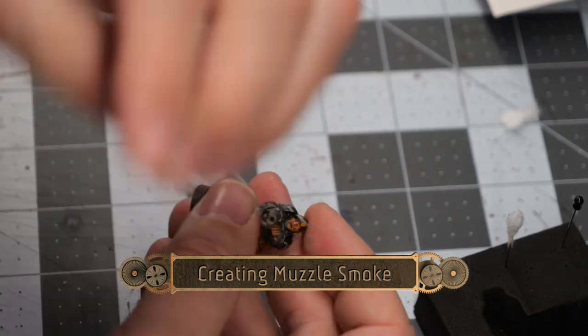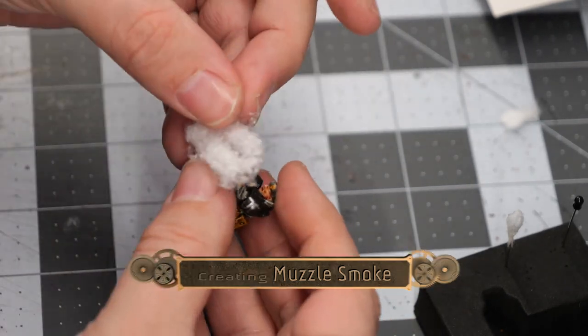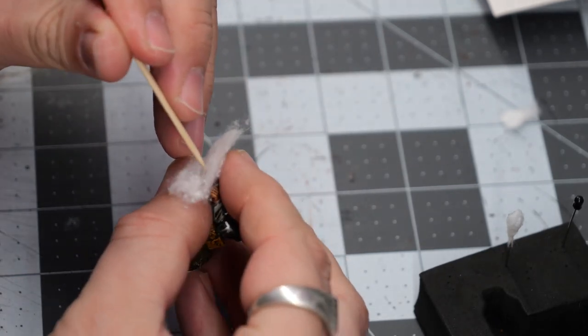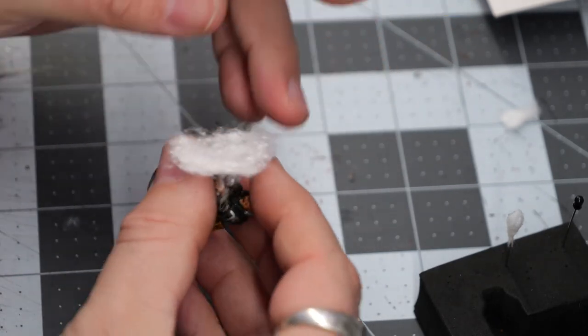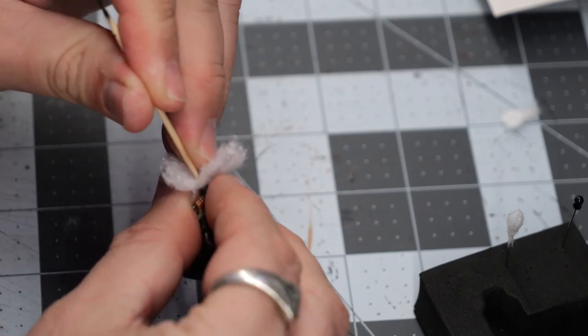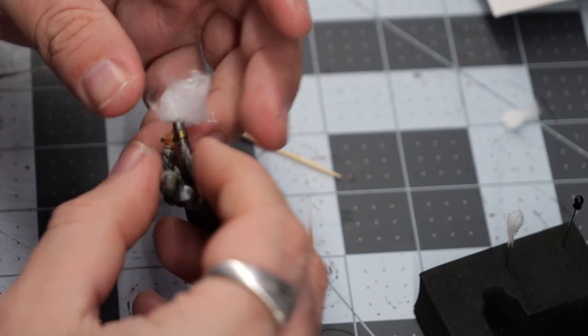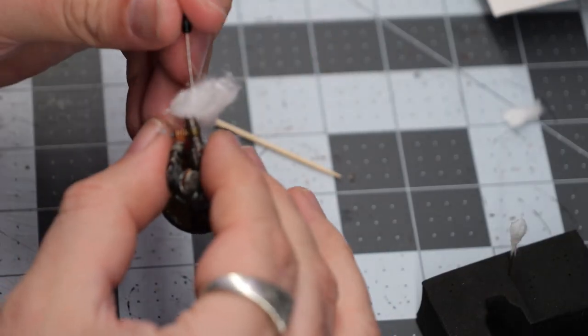Setting that aside, we're going to create a muzzle flare. This is going to be done with some cotton, just stuffing it into the end of the drilled out section of the barrel. Once we've got it wedged in place, we're going to push the cotton forward to create a kind of plume of smoke.